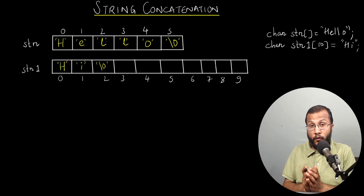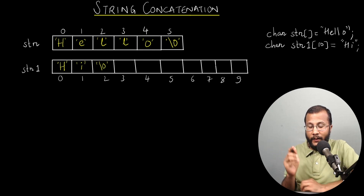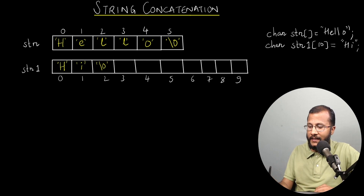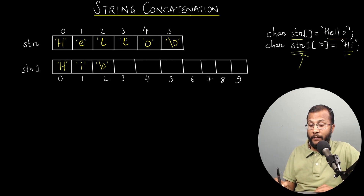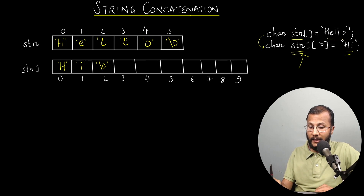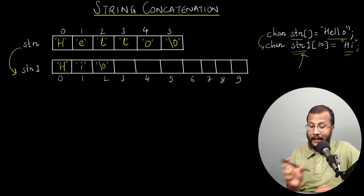In this lecture we are going to write our own function to perform string concatenation. Concatenation is nothing but joining two different strings together. In this example, I have the string str which stores 'hello', and one more string str1 which stores 'hi'. What I'm trying to do is concatenate str to str1 — that means copying the content 'hello' and placing it at the end of str1.